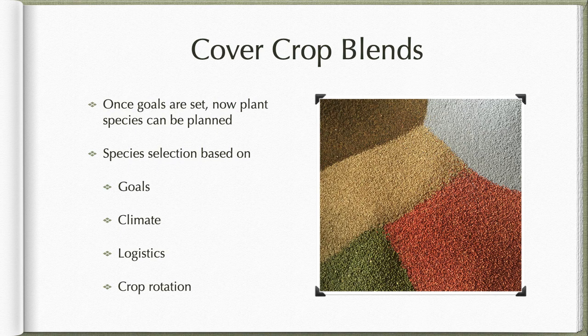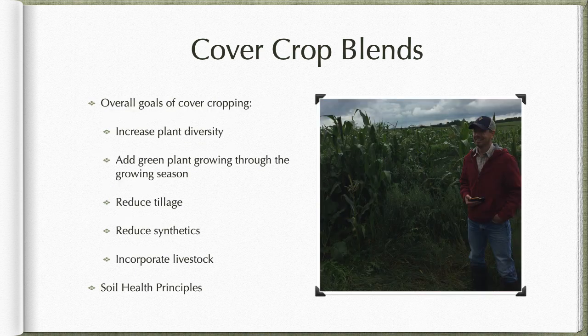Once we have our goals set, we can start looking at what species we want to include in these blends. Species selection is going to be based on our goals, our climate and weather conditions, logistics — how and when we're seeding — and our crop rotation. The overall goals of cover cropping in the big picture are to increase plant diversity, add a green plant growing throughout the whole growing season, reduce tillage, reduce use of synthetics, and have the ability to incorporate livestock on the land. Those are the main five soil principles.